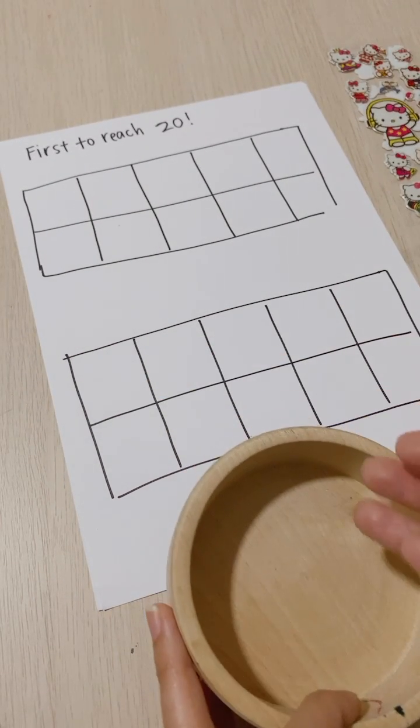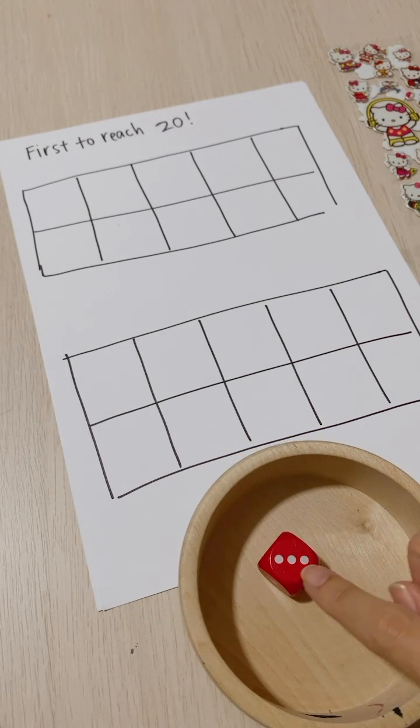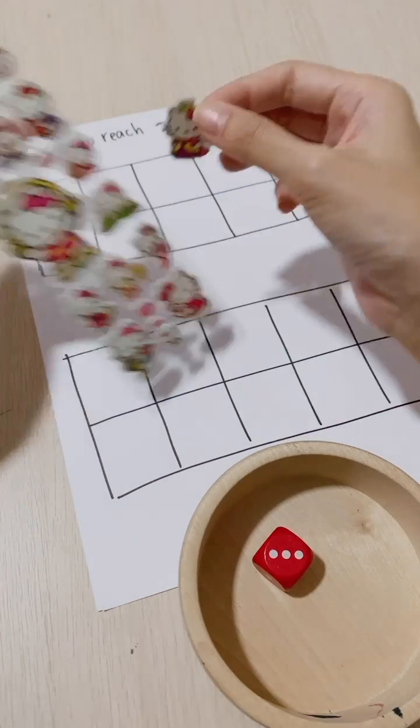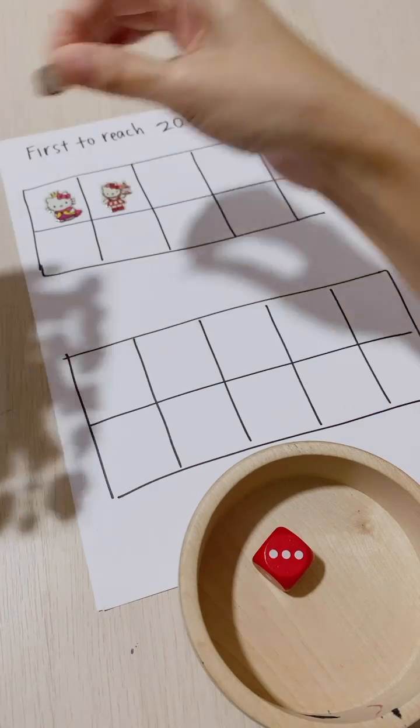player will take the dice and roll. I recommend rolling into a bowl so it doesn't roll too far away. So three. If player one is using the Hello Kitty stickers, she will stick one, two, and three.